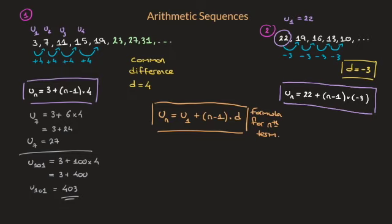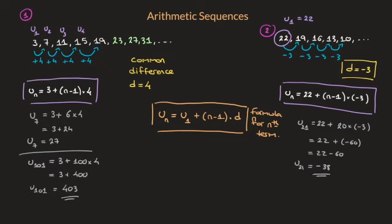Say I wanted to calculate the 21st term: u sub 21 equals 22 plus (21 minus 1), so that's 20, times negative 3. That equals 22 plus negative 60, which equals 22 minus 60. Finally, u sub 21, the 21st term, is equal to negative 38. And so that's what arithmetic sequences are — sequences where to get from one term to the next we're always adding the same amount, known as the common difference, and whose formula can be fully defined provided we know the first term and the common difference D.